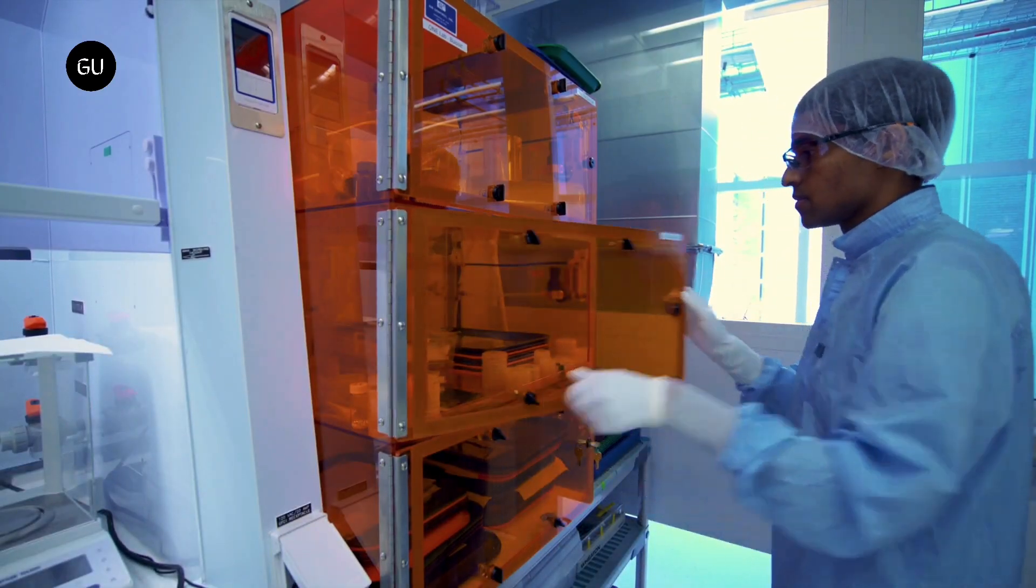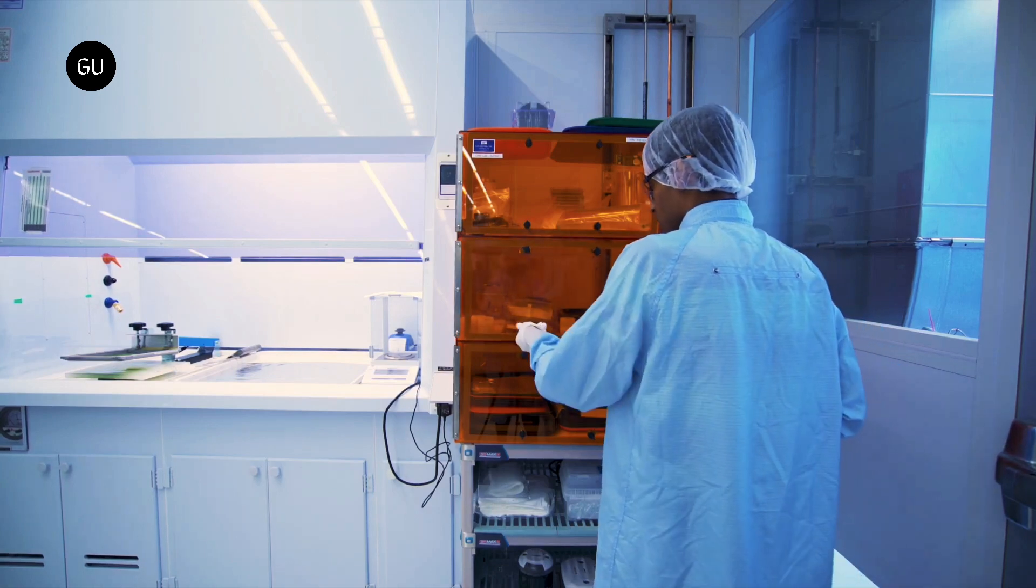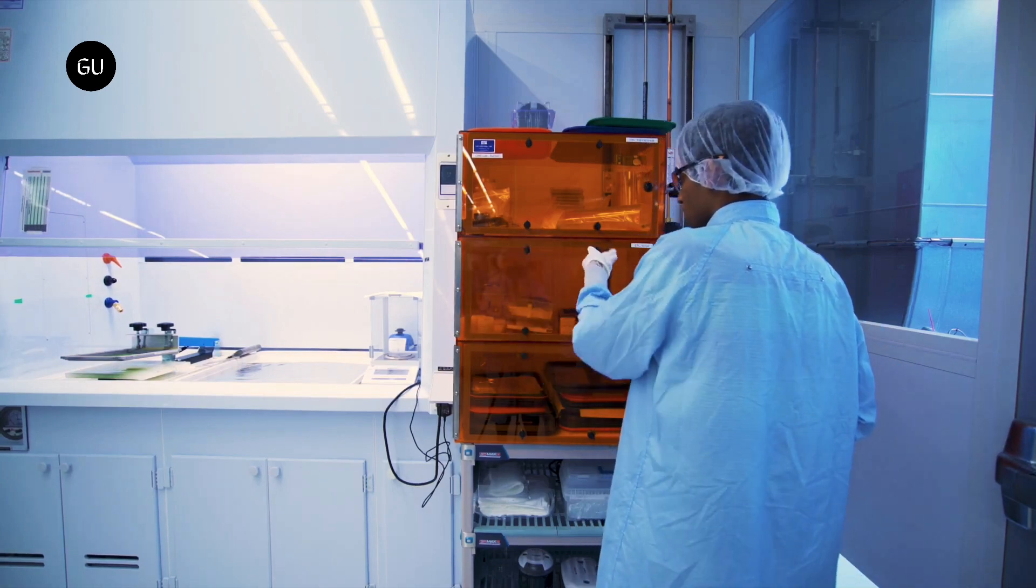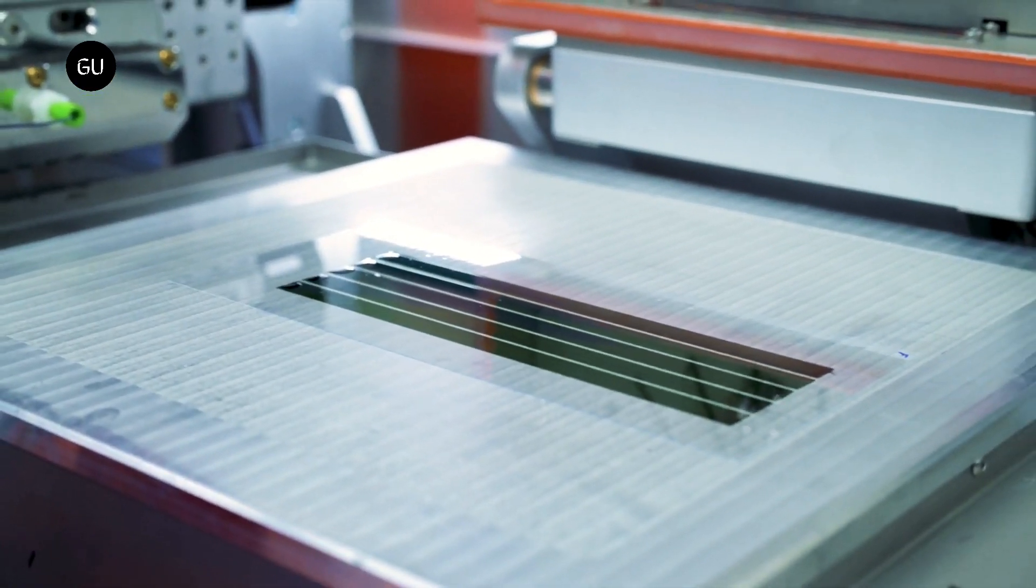Using screen printing, a technique similar to how designs are added to silk screen t-shirts, an electrode is deposited on the structure to complete the solar module. The researchers can then peel the printed module, which is about 15 microns in thickness, off the plastic substrate, forming an ultralight solar device.